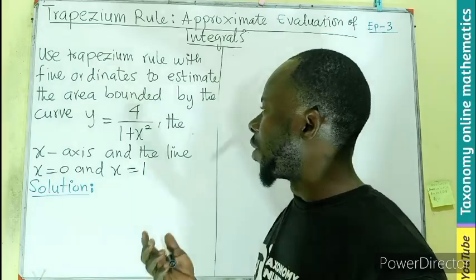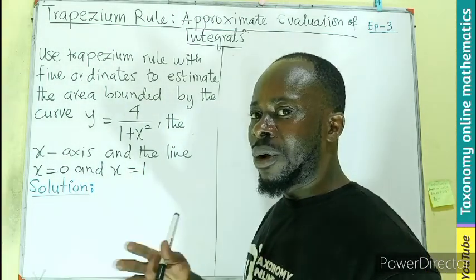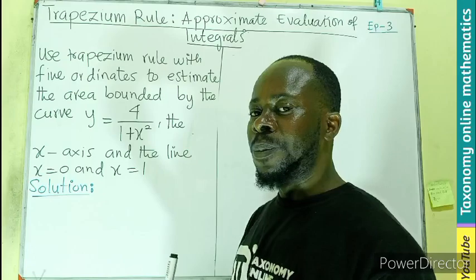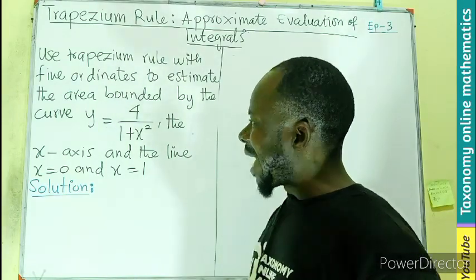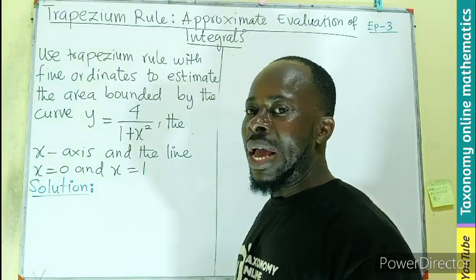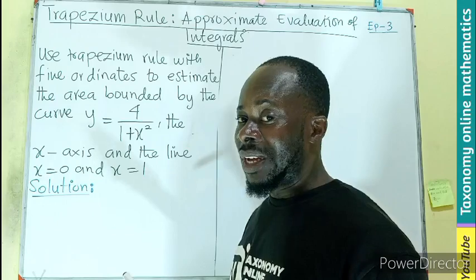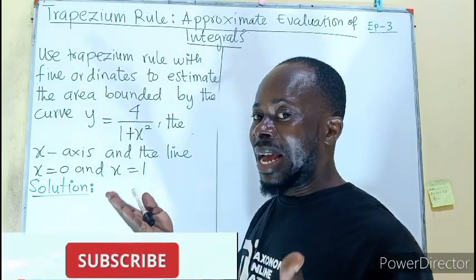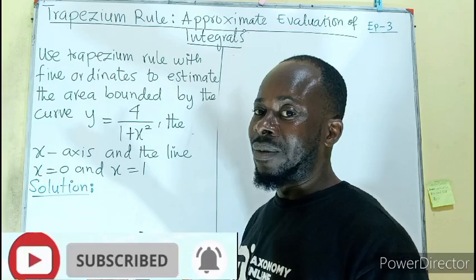with five ordinates to estimate the area bounded by the curve y = 4/(1+x²), the x-axis, and the lines x = 0 and x = 1. So this is the area bounded by the curve and the x-axis ranging from 0 to 1.